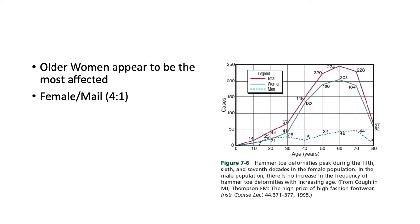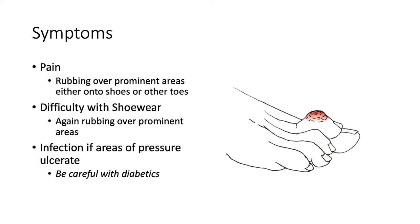For mallet, claw, and hammer toes, older women appear to be the most affected — women are affected about four to one compared to men. For men the prevalence tends to stay fairly constant across ages, but for women there's a big spike as they enter the fifth, sixth, and seventh decade of life.